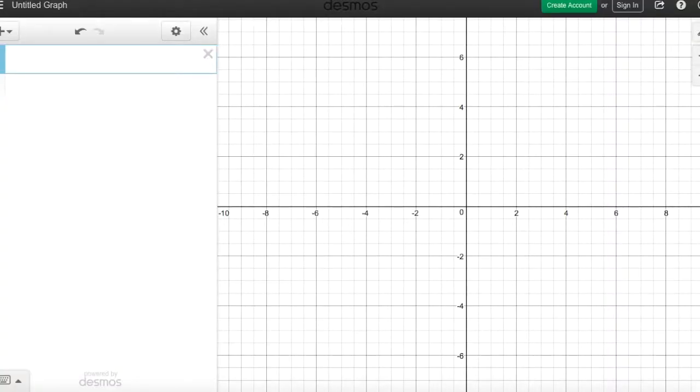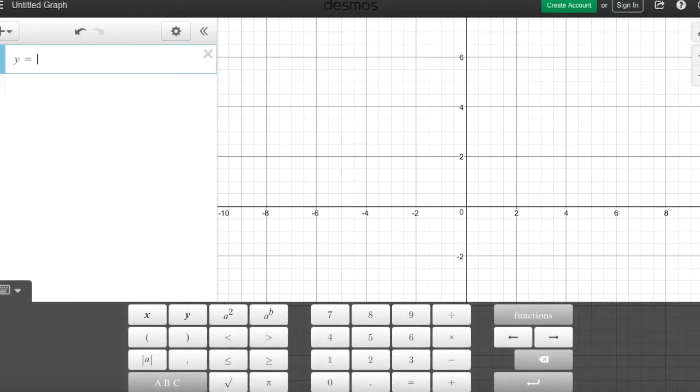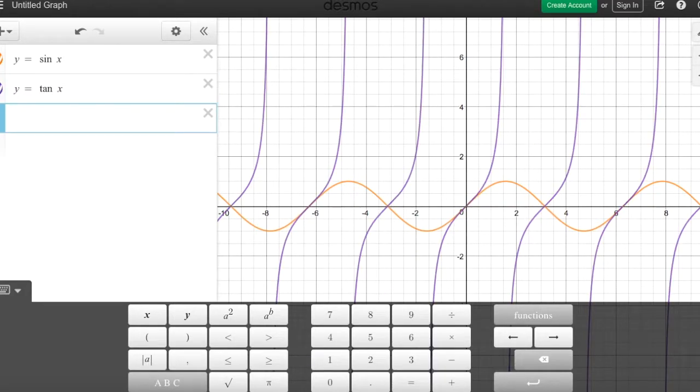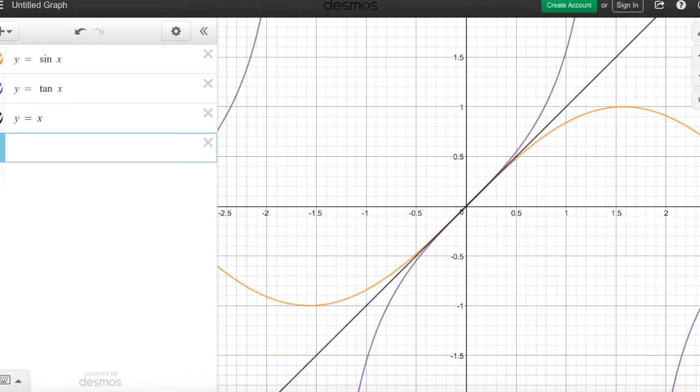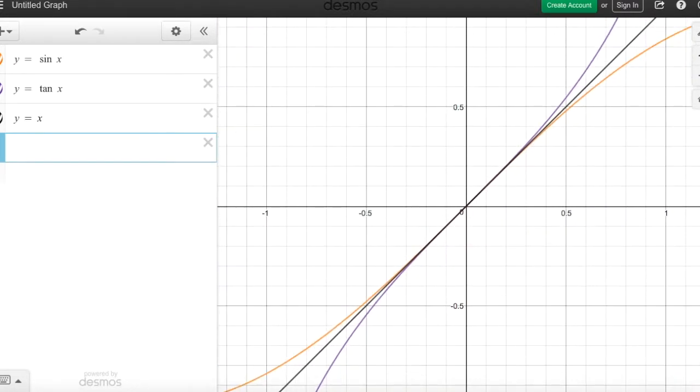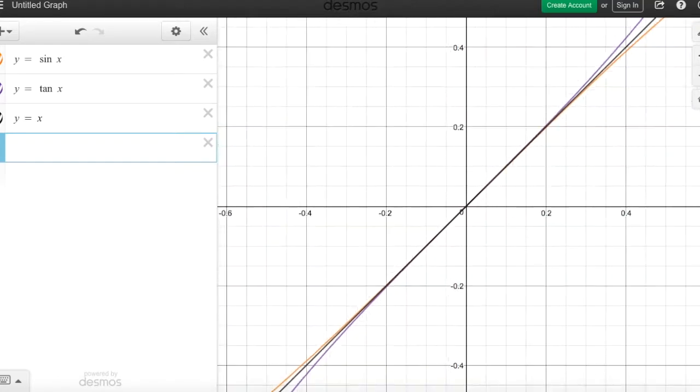See, here on Desmos, I can type in y equals sine x, y equals tangent x, and y equals x. As you can see, near the origin, they are all really close together. Watch as I zoom in, and zoom in some more, you can see that these are incredibly close to each other.